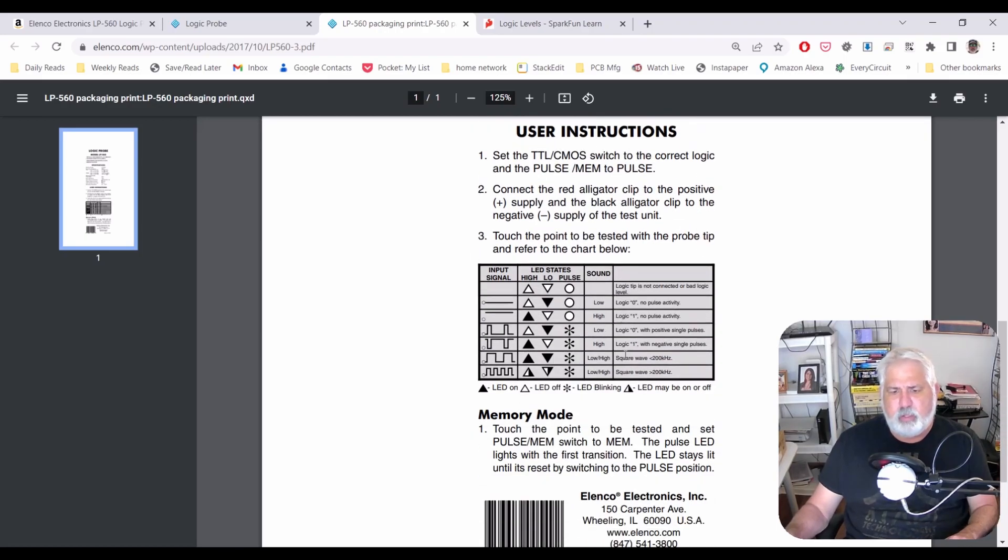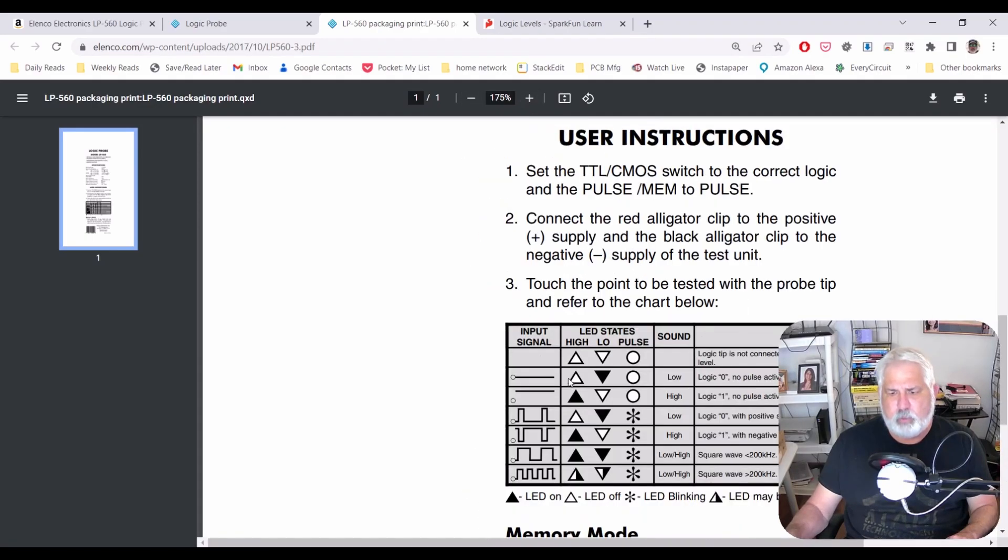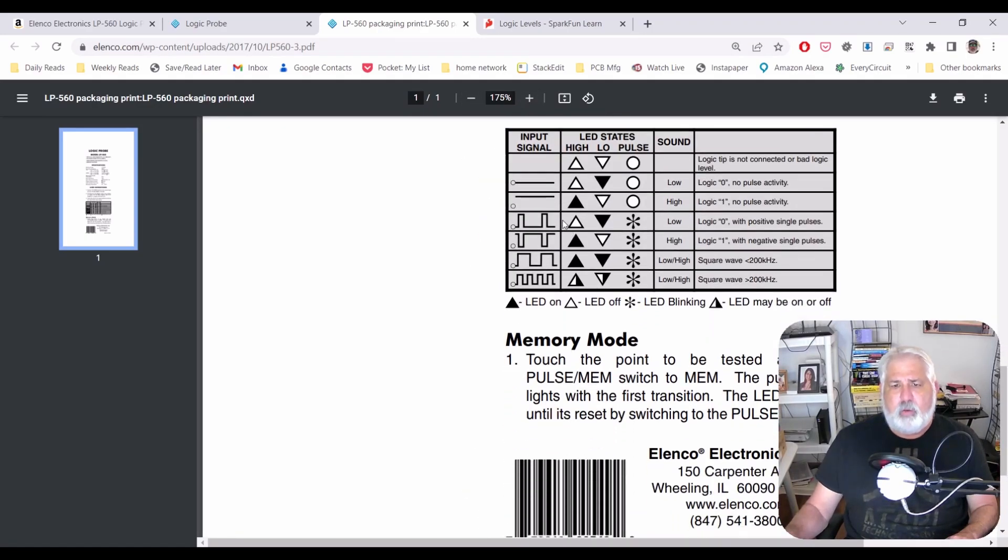So let's look at this chart right here. It's just kind of helpful to understand what's going on. If there's no signal coming in, then high and low are not going to be lit in the pulse. If the voltage is a 0, then low will light up. If the voltage is high, high will light up. If the voltage goes from low to high, then you'll get the low and you'll get the pulse indicator. If it goes from high to low, then you'll get the opposite. You'll get the high indicator with the pulse.